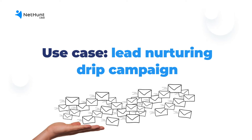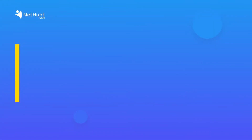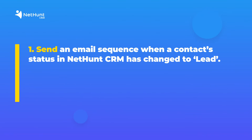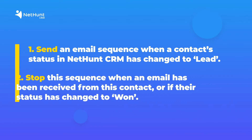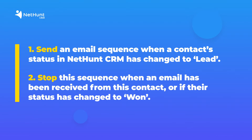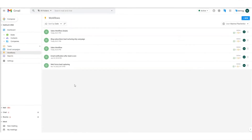Let's say you need to send an email sequence when a contact status in NetHunt has changed to lead. Similarly, you might need to stop this sequence when an email has been received from the same contact, or if their status has changed. Here's how to do it.